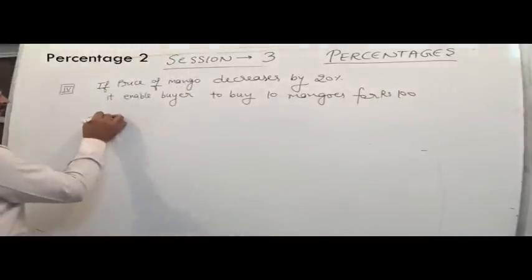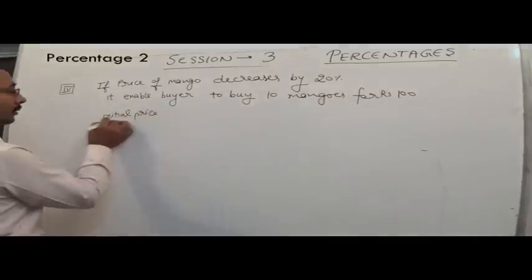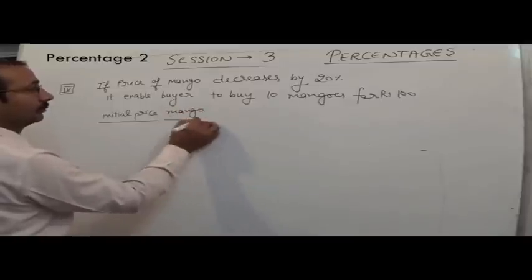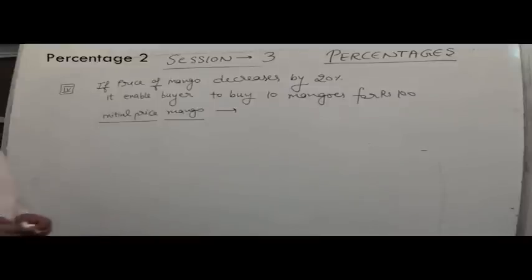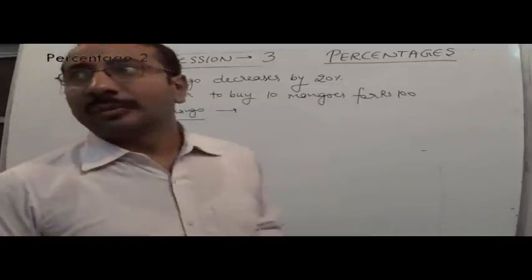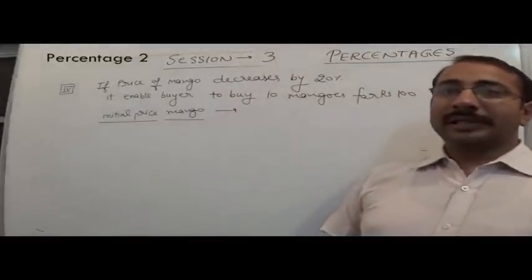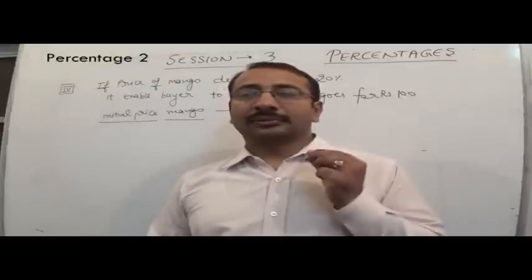We have to find the initial price of mangoes per mango. The price of mangoes decreases by 20%, enabling a buyer to buy 10 more mangoes for ₹100. We have to find the initial price per mango.